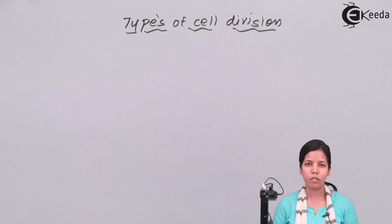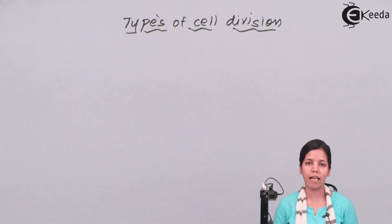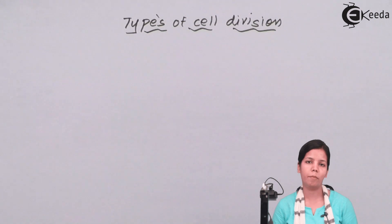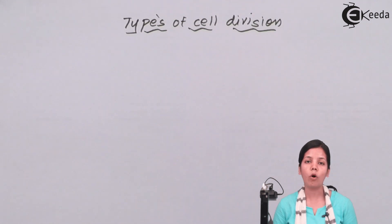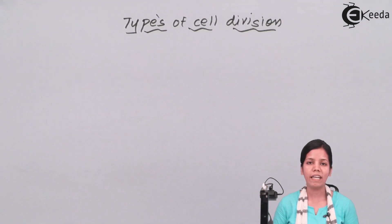During mitosis, whatever the chromosome number is, that same chromosome number is duplicated into the daughter cell. For example, if the parent has 46 chromosomes — the diploid number — then the daughter cells will also have 46 chromosomes, so that the genetic makeup is maintained.